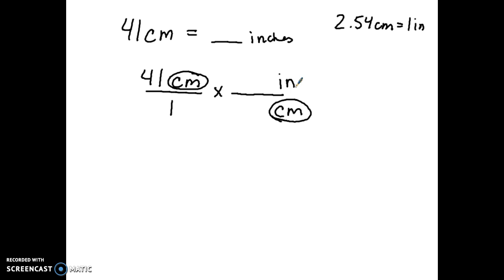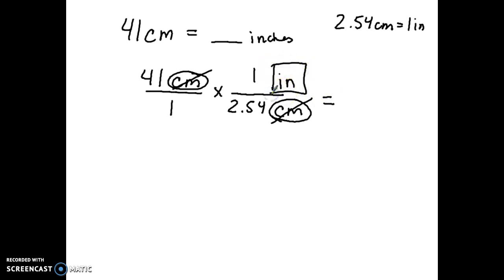If you mix up where the units go, you obviously won't get the right answer. Centimeters in the denominator is completely based on needing to cancel it out. So now centimeters have canceled out. I plug in the coefficient from the conversion factor in front of centimeters, which is 2.54, and inches had the coefficient one. My final answer will have inches as its unit. Putting this in a calculator gives 16.1 inches. So a line that's 41 centimeters is equivalent to 16.1 inches on an English ruler.